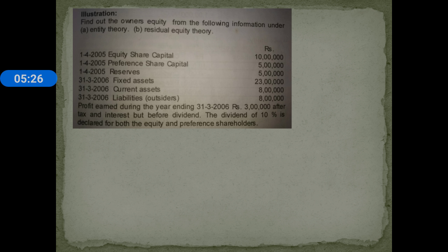Let us solve the problem. Find out the owners' equity from the following information under entity theory and residual equity theory. Equity share capital: ₹10 lakh; preference share capital: ₹5 lakh; reserves: ₹5 lakh; fixed assets: ₹23 lakh; current assets: ₹8 lakh; liabilities: ₹8 lakh. Profit earned during the year ending 31st March 2006: ₹3 lakh after tax and interest but before dividend. A dividend of 10% is declared for both equity and preference share capital.